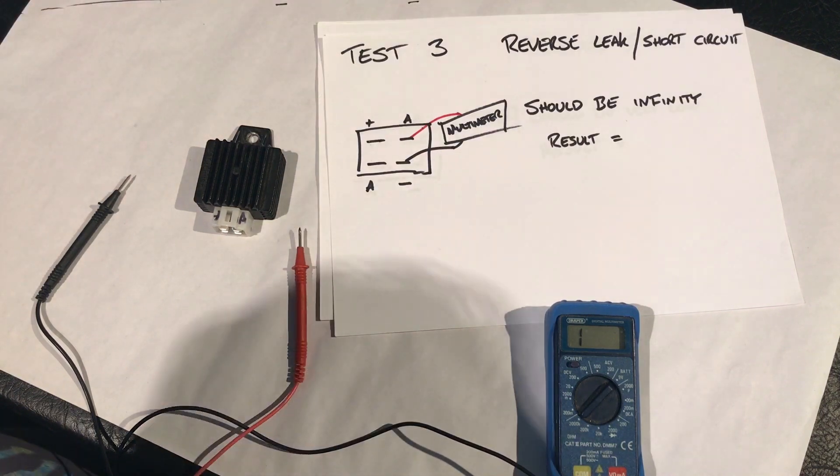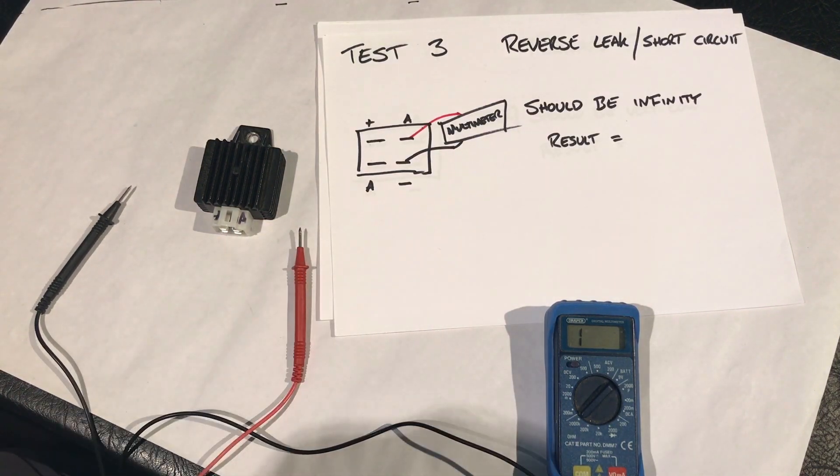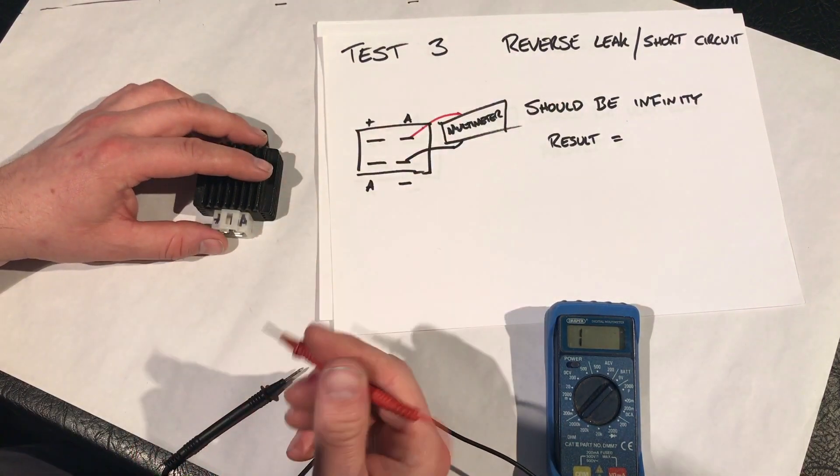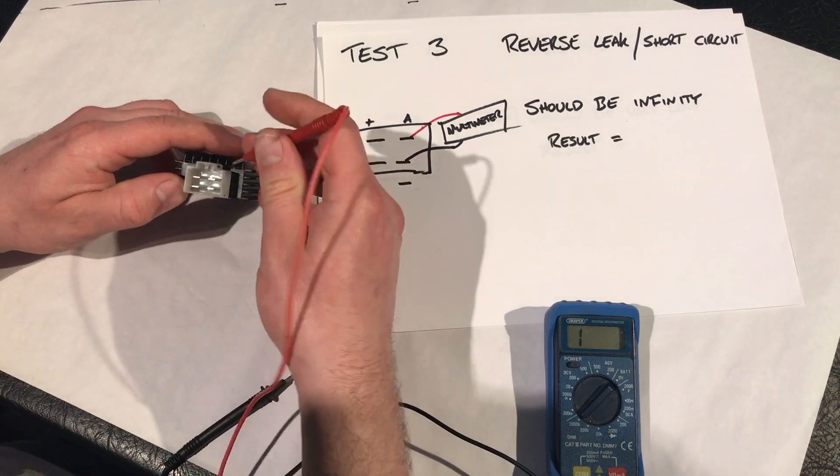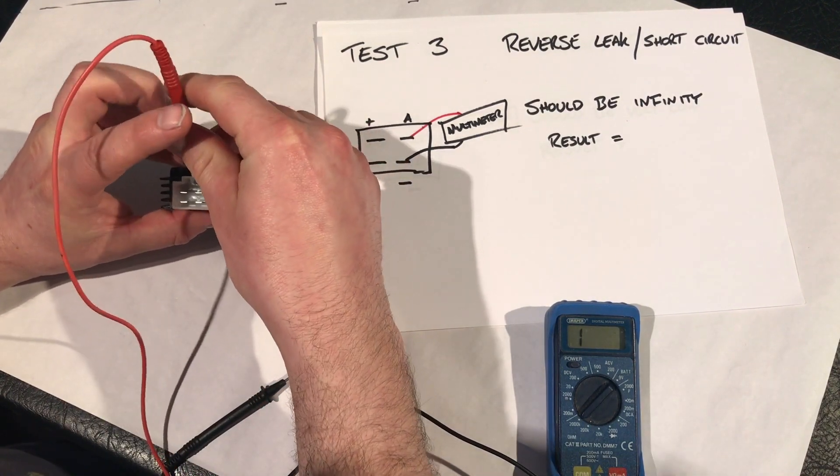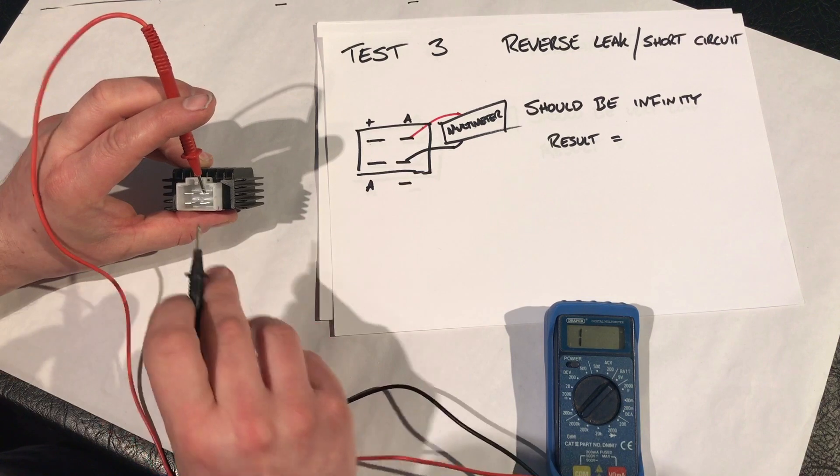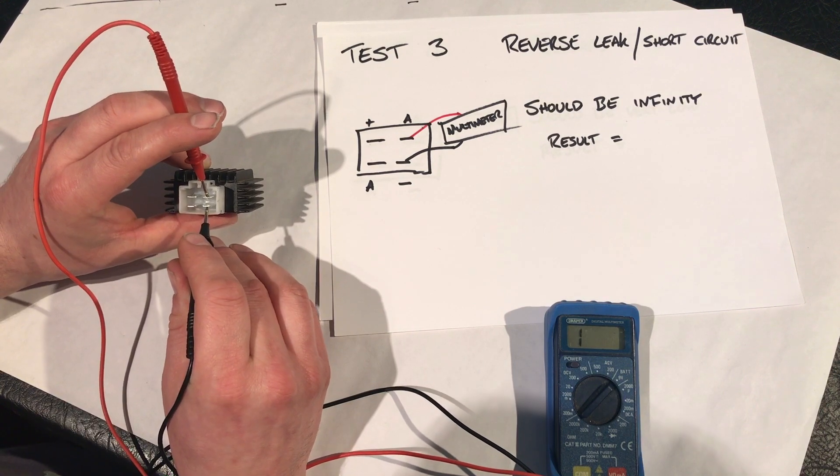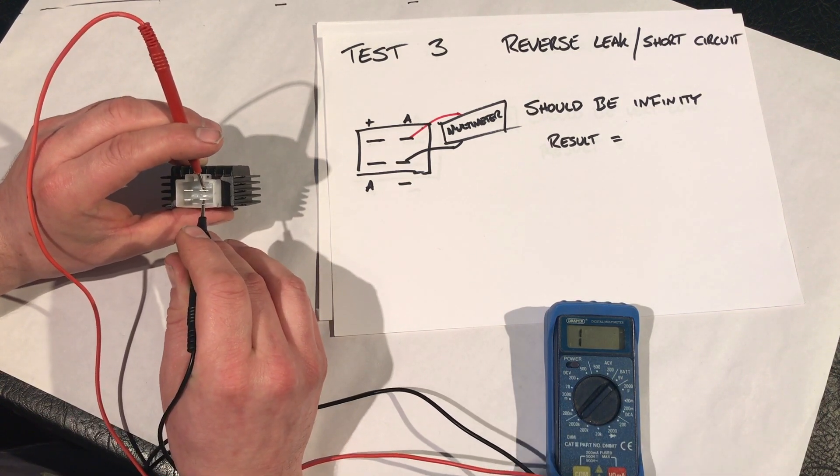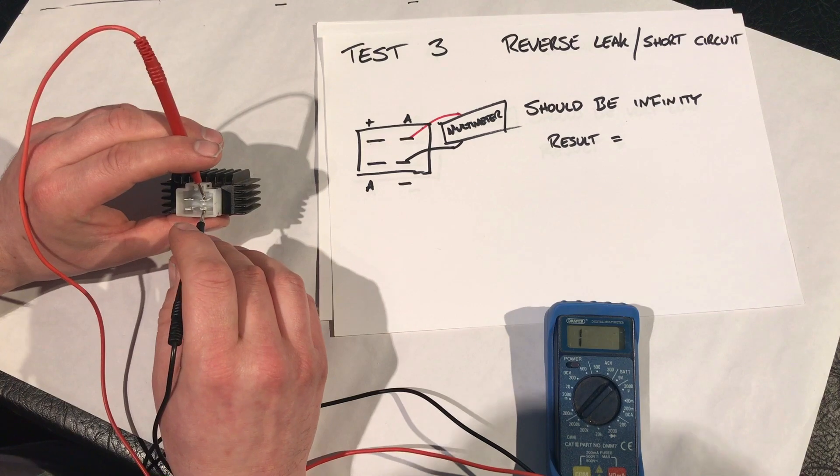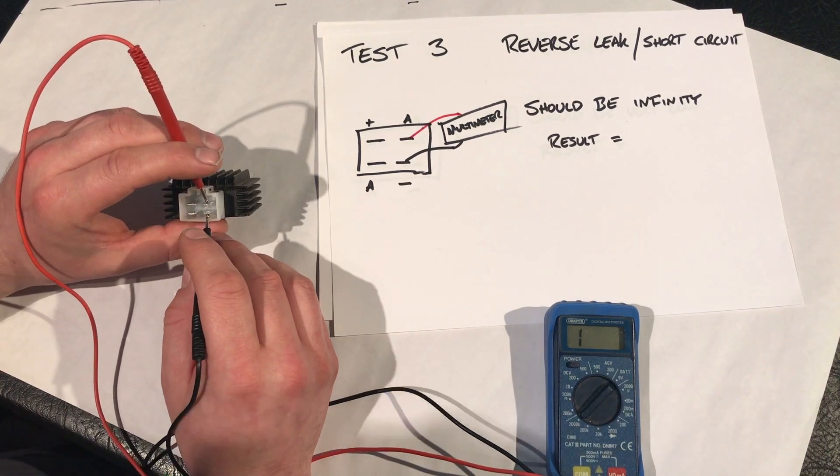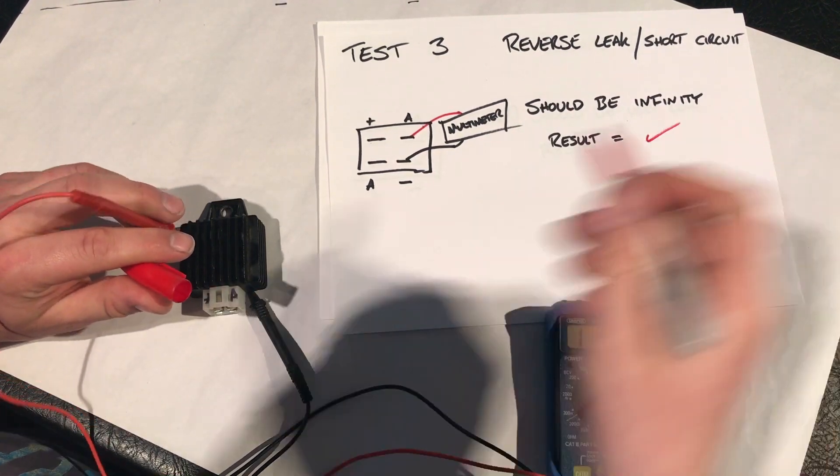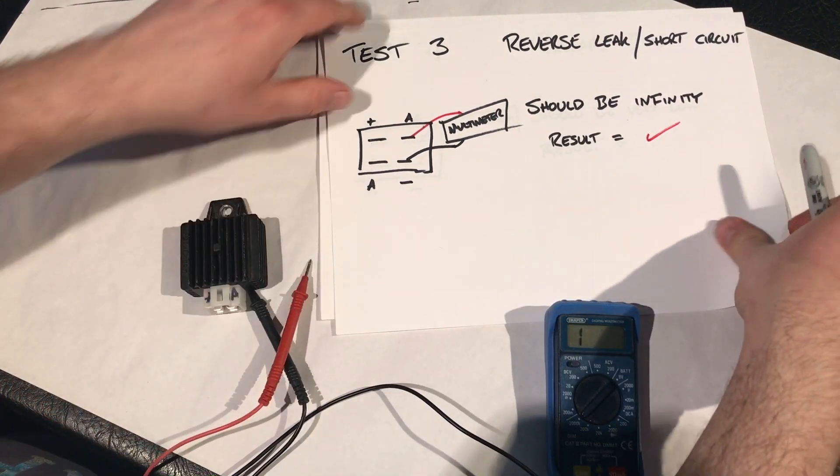So anyway, result 980. So test three. As you can see now, we're moving around to the next diode. So again, reverse leak short circuit should show infinity. So we're going to go to now the alternator pin that we've already used, and then we're going to the battery negative or earth terminal. As you can see, that is also okay. So that's showing infinity according to this multimeter. So that's a pass. Mark it down so I've got a reference.